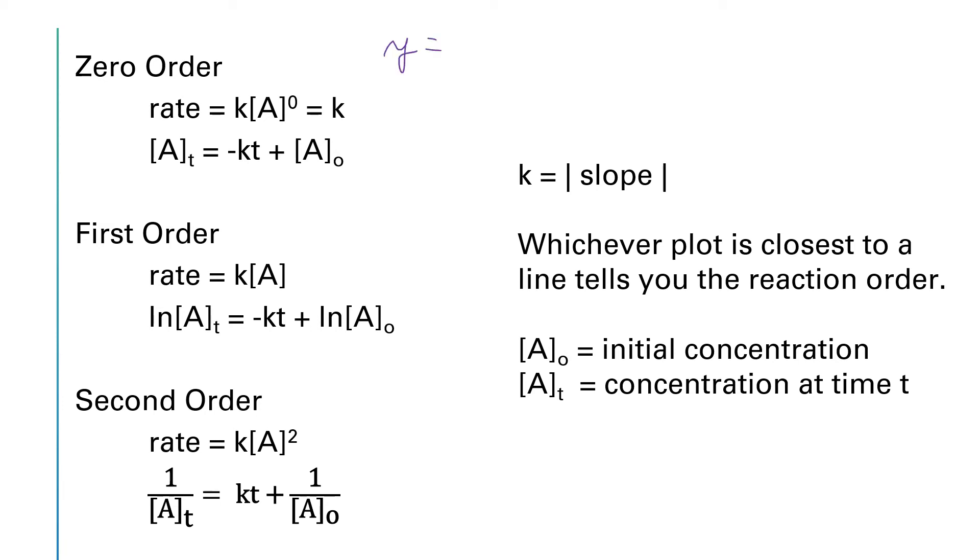Now what I want to point out to you is that all of these integrated rate laws have the form y equals mx plus b. x in all of these cases is time. And m varies. M for a zero order reaction is the concentration itself. Y for a first order reaction is the natural log of the concentration. And for a second order reaction, y would be the reciprocal of the concentration.